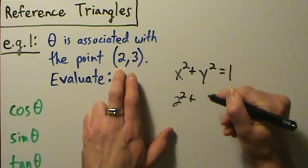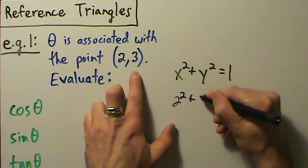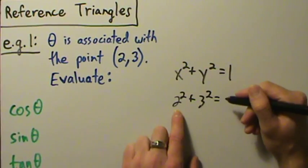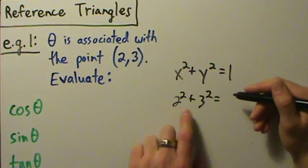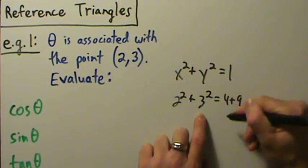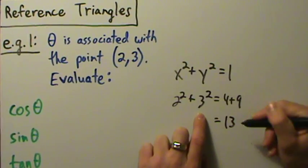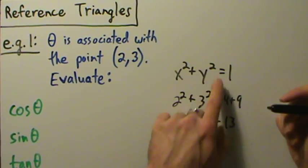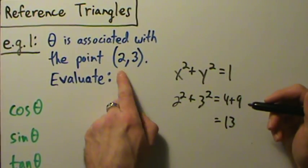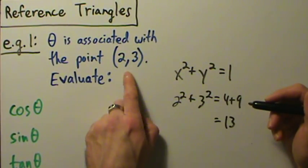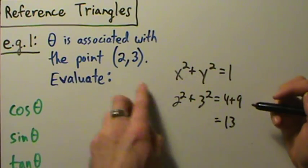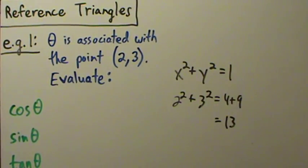2 squared is 4, 3 squared is 9, so that's 4 plus 9, which equals 13 — which is totally not 1. So the coordinates of this point don't satisfy the unit circle equation, meaning this point is not on the unit circle.